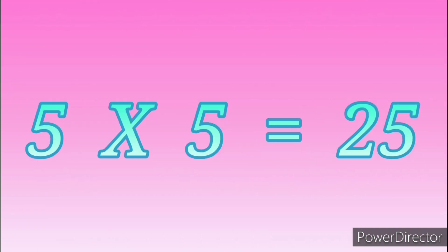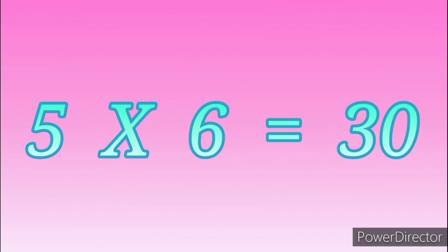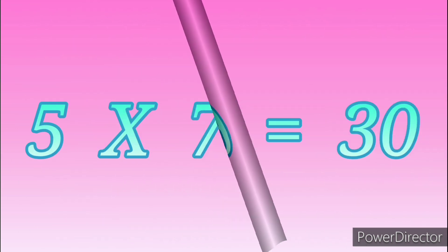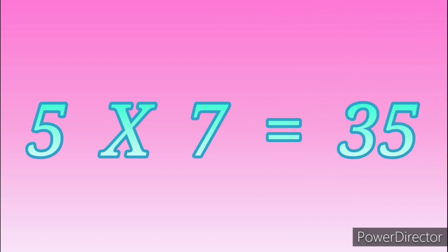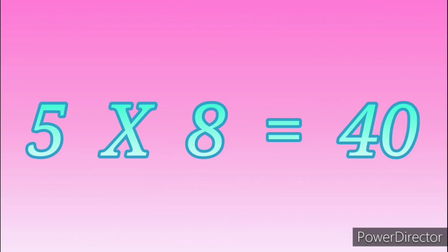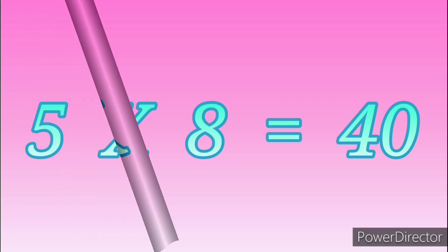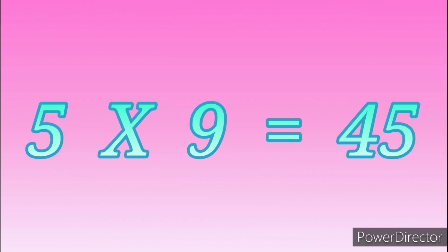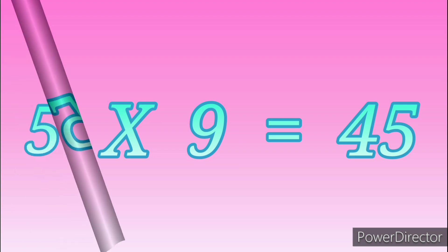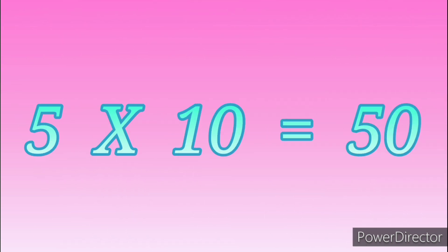Five fives are twenty-five. Five sixes are thirty. Five sevens are thirty-five. Five eights are forty. Five nines are forty-five. Five tens are fifty.